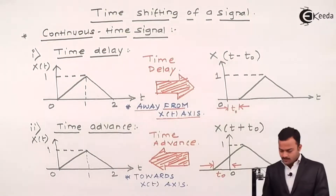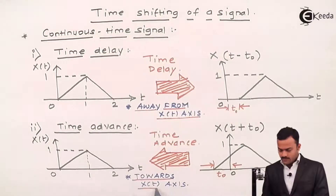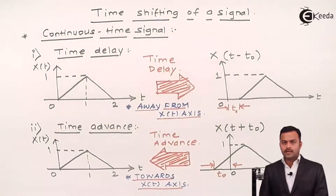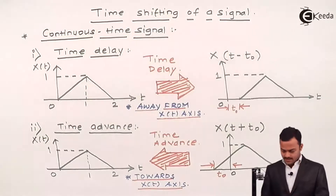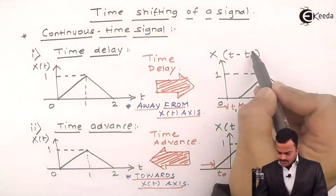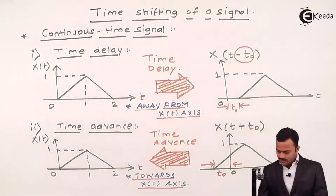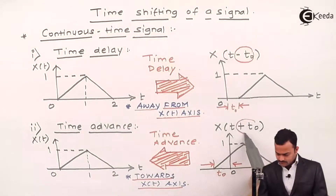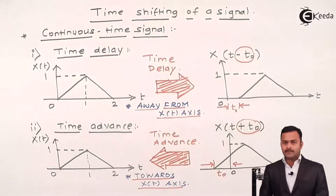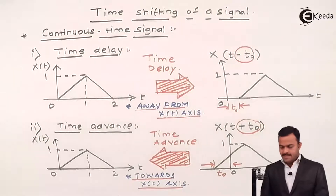These are the two most important statements which will decide whether we take t₀ as plus or minus. Normally delay means it's late, and late is a negative thing — hence we use minus t₀. Advance, considering its meaning, is a more positive term — hence it is plus t₀. We have to keep all this in mind while deciding whether we are talking about a delay or an advancement. The same thing we can do for a discrete time signal as well.